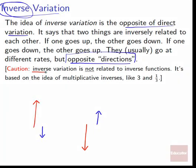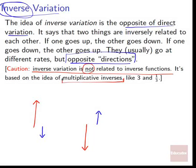Inverse variation is not related to inverse functions. It's based on the idea of multiplicative inverses — those reciprocals like three and one-third. Three and one-third are multiplicative inverses because they cancel each other out. We're not talking about functions canceling each other out; we're talking about the multiplicative inverse, and that's where inverse variation gets its term from.